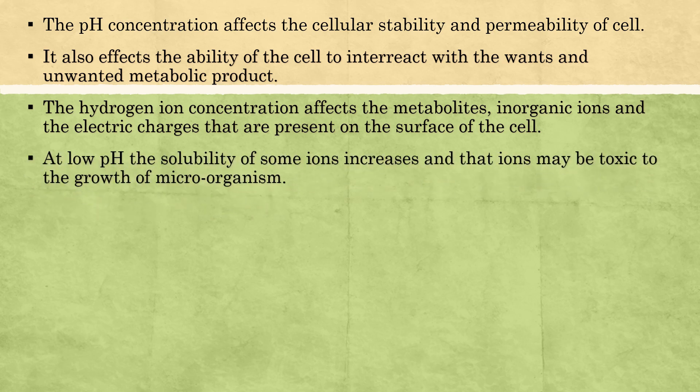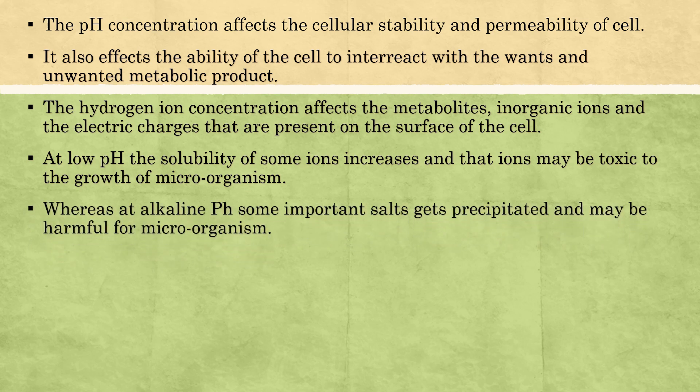At low pH, the solubility of some ions increases and those ions may be toxic to the growth of microorganisms. Due to increased solubility, these ions can easily permeate and enter inside the cell, where some may be toxic and inhibit the growth of that particular microorganism. At alkaline pH, some salts get precipitated and these salts may be harmful to the microorganism — after precipitation, they form a layer inside the cell which may be harmful.